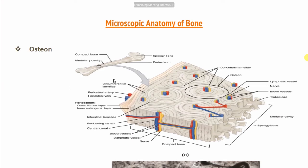We can see the osteon here. And the layer of the light pink color — we have the outer covering, the periosteum. The outer covering is made of fibers. Under that layer, we have two layers of periosteum: the outer fiber layer and the inner fiber layer.